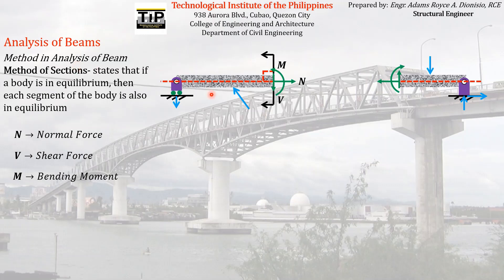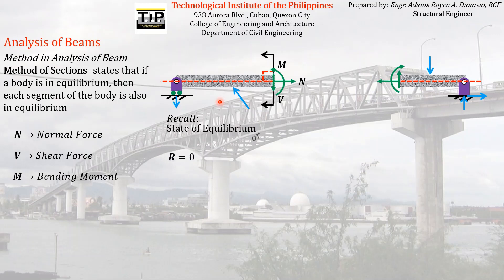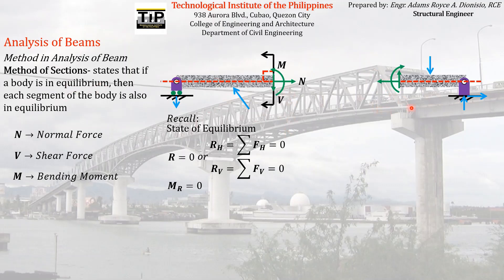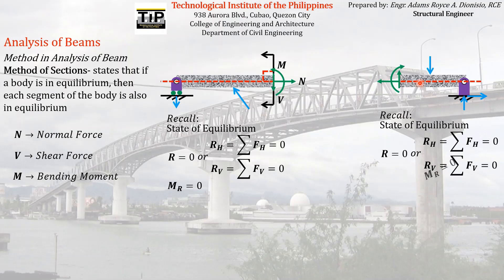According to the method of sections, both segments — their free body diagrams — must be in equilibrium, if we say the original structure was in equilibrium before we cut it. So for each segment, the summation of forces horizontally, vertically, and the summation of moments must all equal zero.